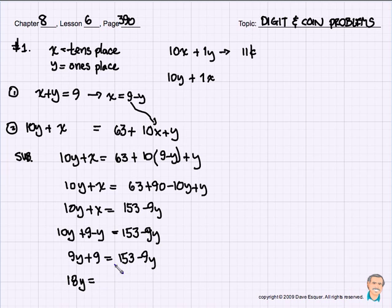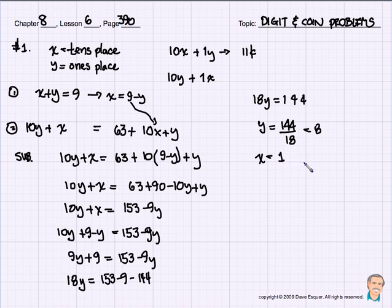Add 9y to both sides, I get 18y. Turns out to be 153 take away 9, which turns out to be 144. So 18y turns out to be 144, and lo and behold, y turns out to be 144 divided by 18, and y turns out to be 8. So if y turned out to be 8, 8 plus something is 9, x turned out to be 1. So the number that we were looking for was 1 in the tens place, and 8 in the ones place, so the number turns out to be 18. Our solution is 18.